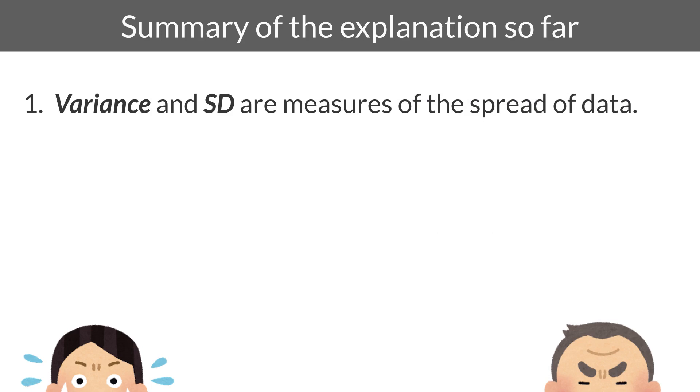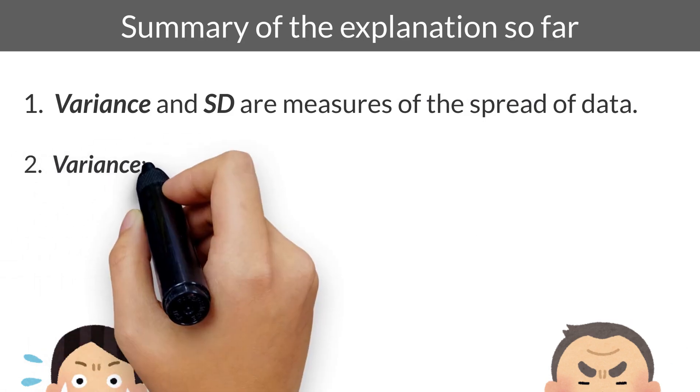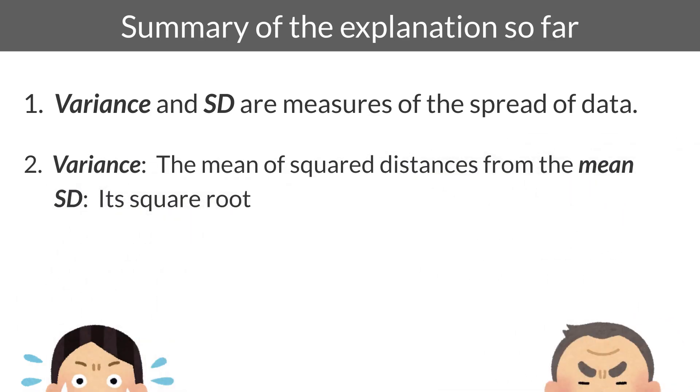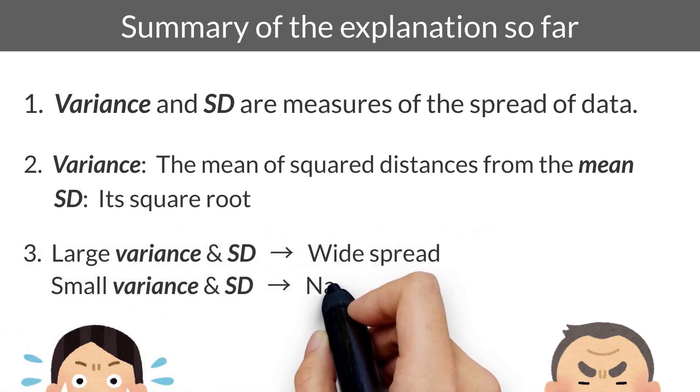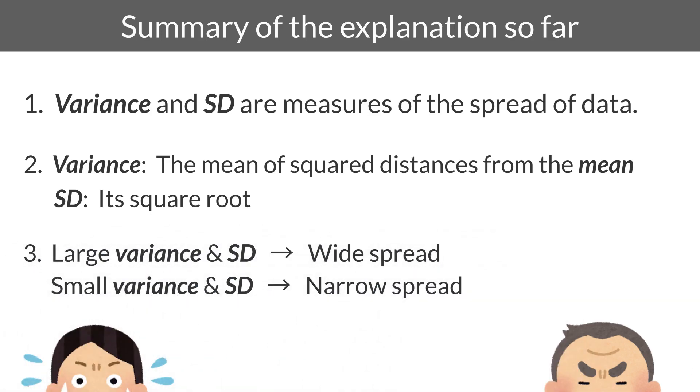1. Variance and standard deviation are measures of the spread of data. 2. The mean of square distances from the mean is variance, and its square root is standard deviation. 3. Large variance and standard deviation indicate widespread in data, and vice versa.